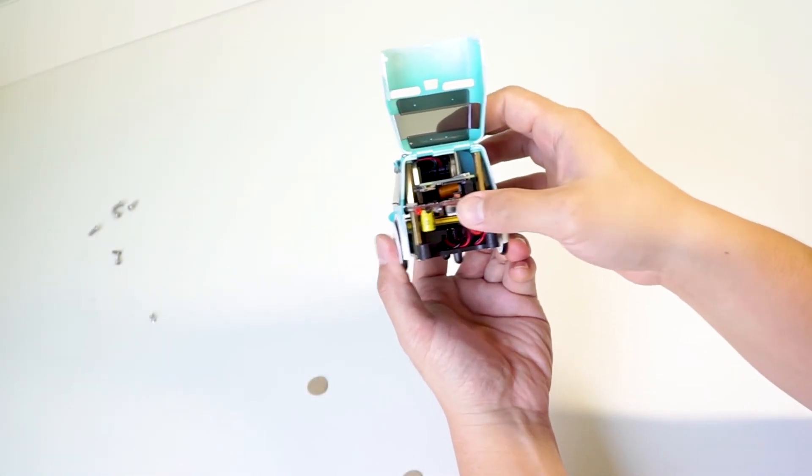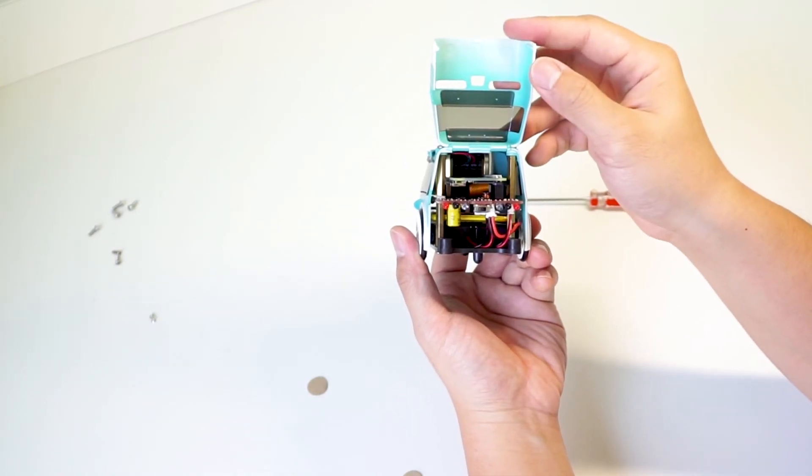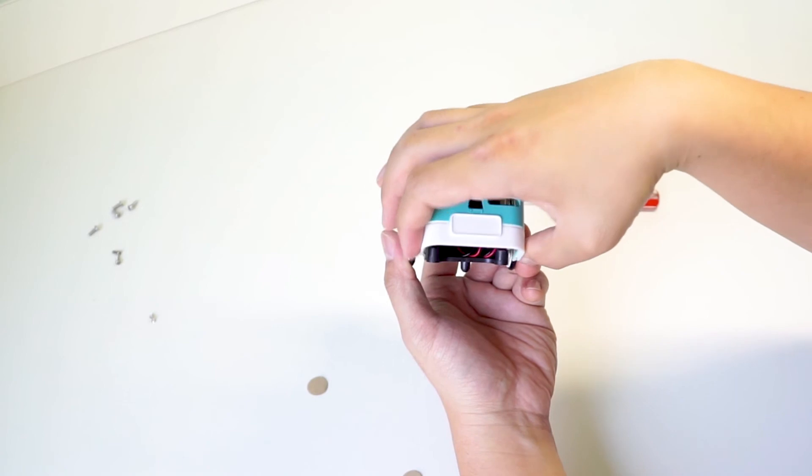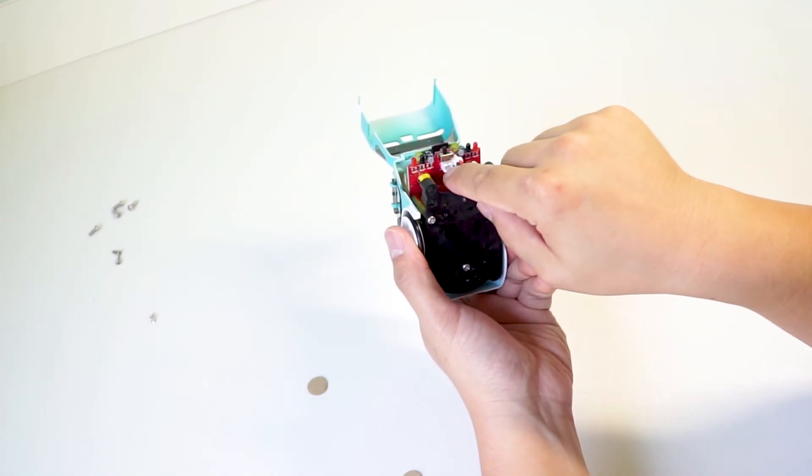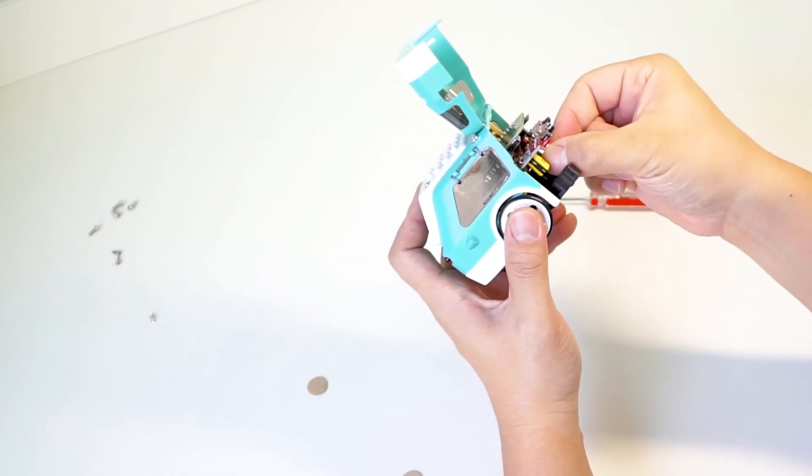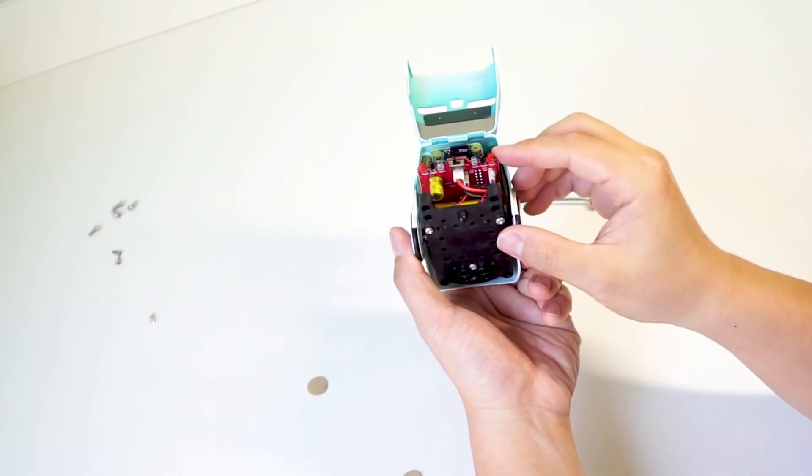All right, last step! Open Zumi's trunk and make sure that the power switch is in the off position, which is the zero position towards the left. Then, plug in the battery to this connector right here. And that's it! You can head to the next video about powering on and getting to the dashboard. See you there!